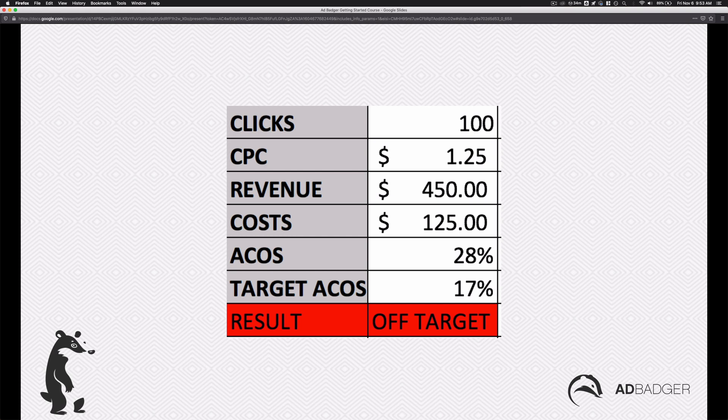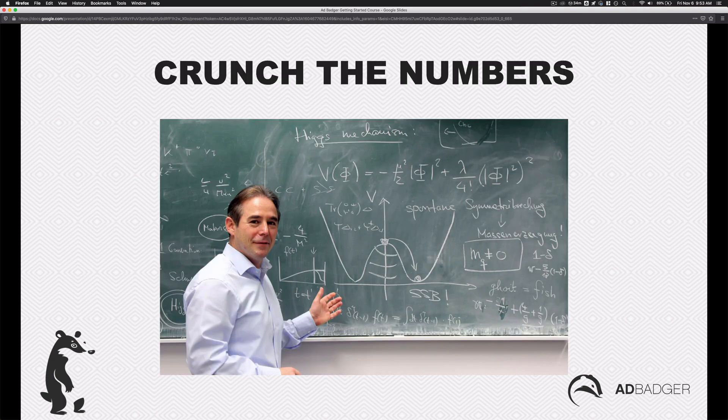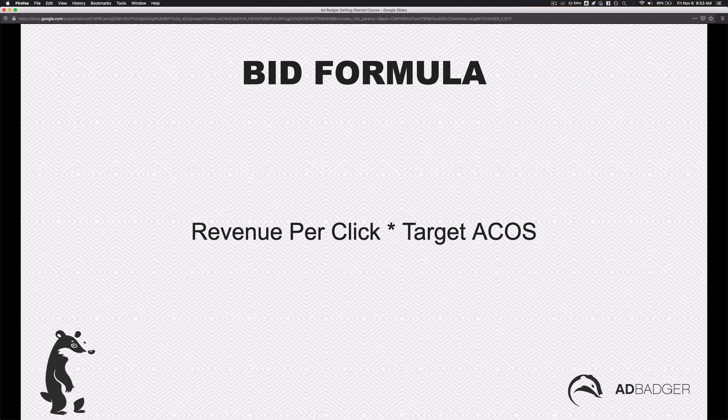We don't want to necessarily pause this — we want to optimize it. So we go in and crunch the numbers. This is not exactly how Bids by Badger operates, but it is the core thesis behind Bids by Badger's algorithm. So if you're going to be optimizing your bids using Bids by Badger's manual mode, or you're going to turn on the algorithm which we'll get to later — this is a core thesis of understanding where a bid is calculated and where it comes from.